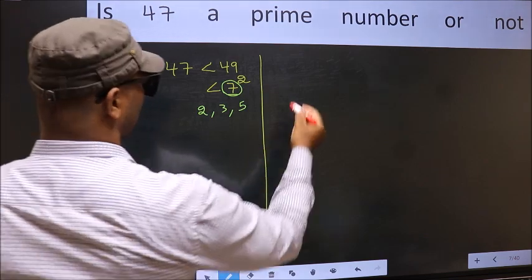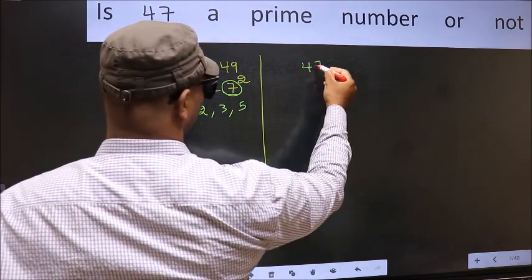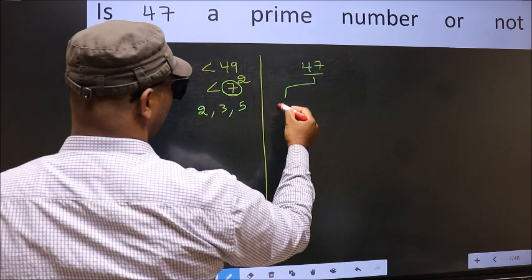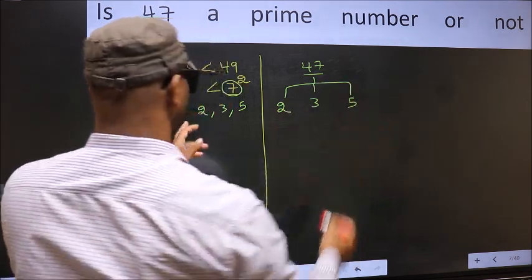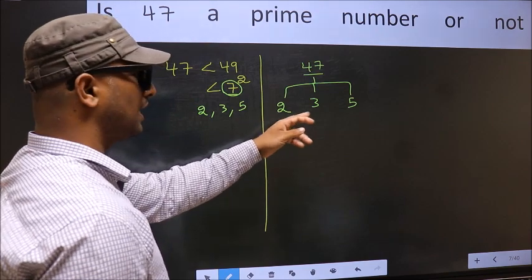Now, for the given number, we should check divisibility by these numbers. That is 2, 3 and 5.